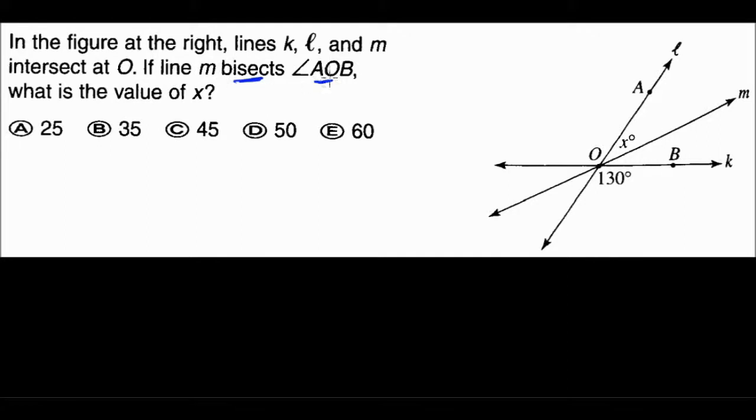First of all, if line M bisects angle AOB, what's angle AOB? The way you read this is you start with A, so A is here, you go to O, and then you go to B. So this angle, which is all of this, this angle is angle AOB.